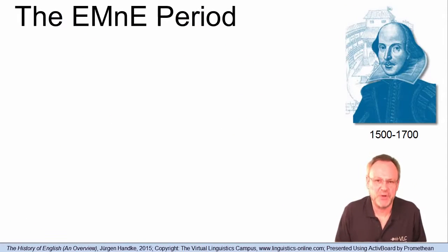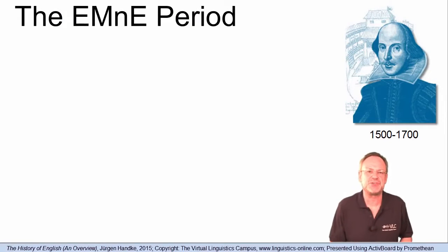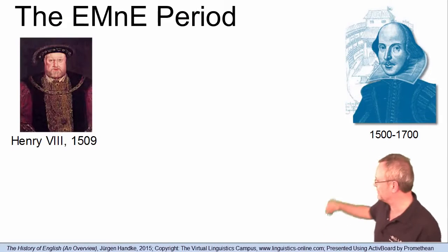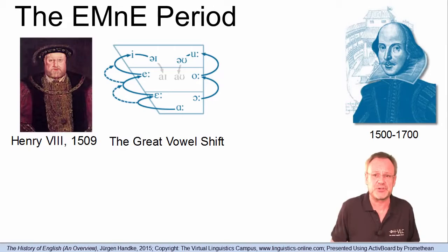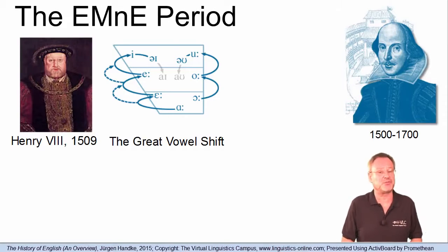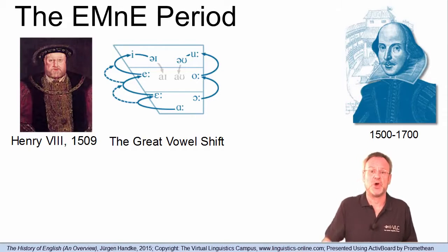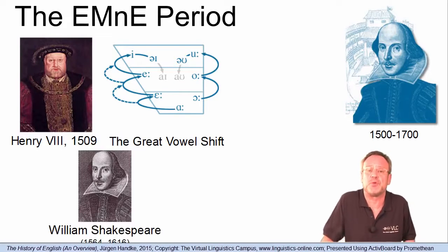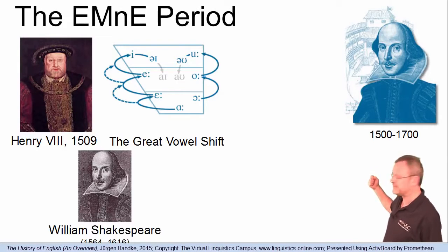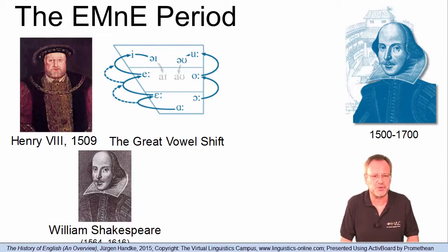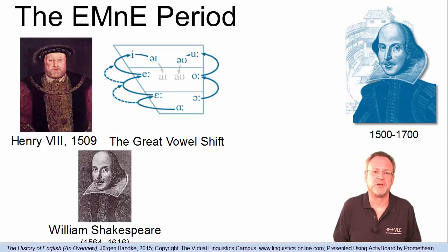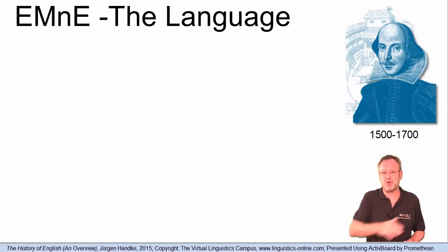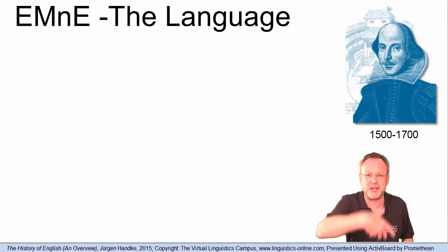The beginning of the Early Modern English period coincides with the ascendancy of Henry VIII to the throne in 1509. The end of the Early Modern English period is marked by the completion of the great vowel shift and the beginning of the scientific age at around 1700. Most influential with regard to Early Modern English were the works of William Shakespeare, and for this reason, Early Modern English is often alternatively referred to as Shakespearean English. By the end of the Middle English period, most of today's syntactic and morphological patterns had been established.